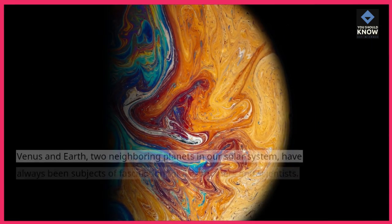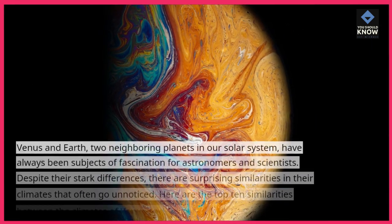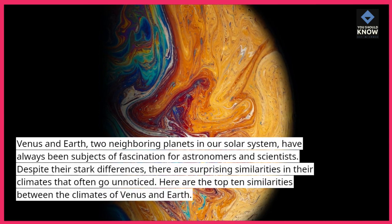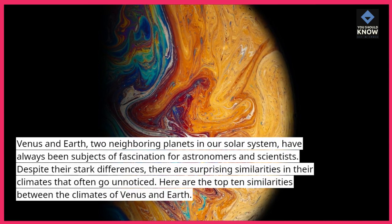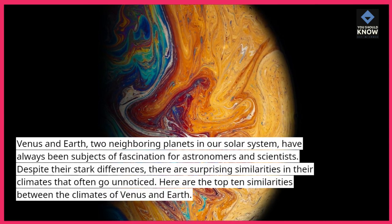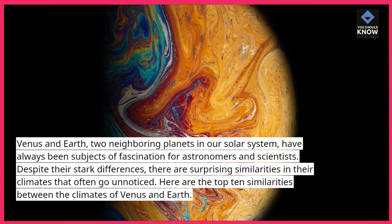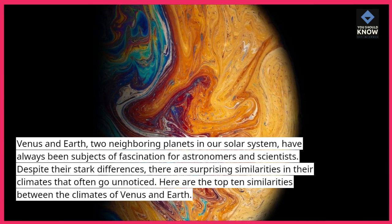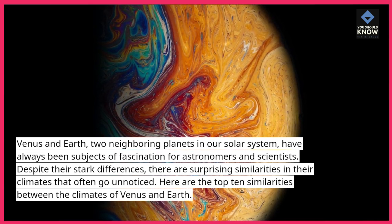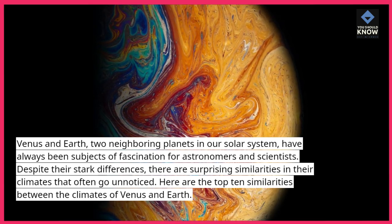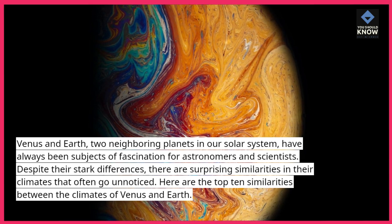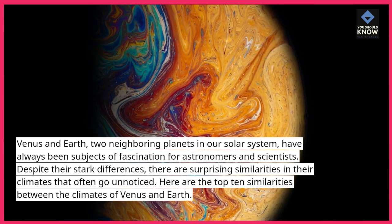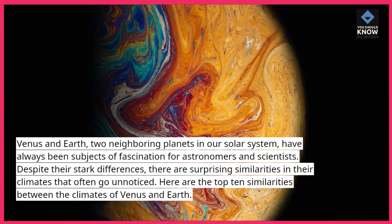Introduction: Venus and Earth, two neighboring planets in our solar system, have always been subjects of fascination for astronomers and scientists. Despite their stark differences, there are surprising similarities in their climates that often go unnoticed. Here are the top 10 similarities between the climates of Venus and Earth.